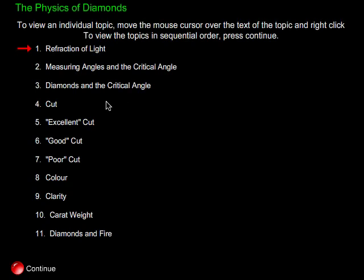We'll be looking at cut and different types of cut, including excellent, good, and poor cut. Color, clarity, and carat weight will also be explained. And finally we'll be looking at diamonds and fire. Let's begin.